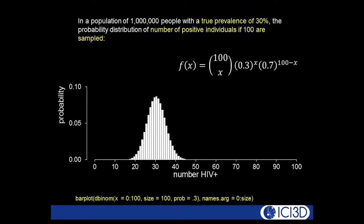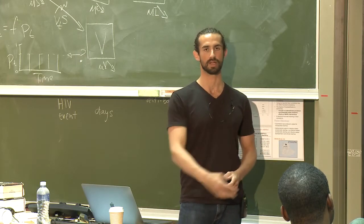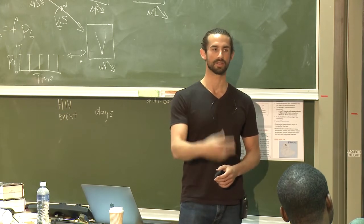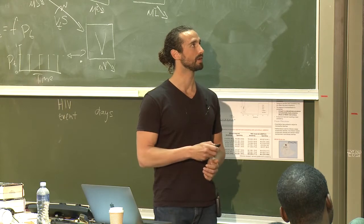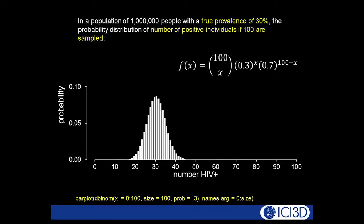You're in a city of a million people. Imagine you're omniscient — you actually know everything. You know the city has a true prevalence of HIV of 30%, so exactly 300,000 people are infected. Now forget that you know that, and you actually want to estimate the prevalence. The probability distribution of the number of positive individuals if you randomly sampled 100 from that population and tested them for HIV is binomially distributed. The binomial distribution tells you the number of positive outcomes for a given known probability of positive and a given known number of trials — here, 100 trials, probability of positive 0.3, probability of negative 0.7.